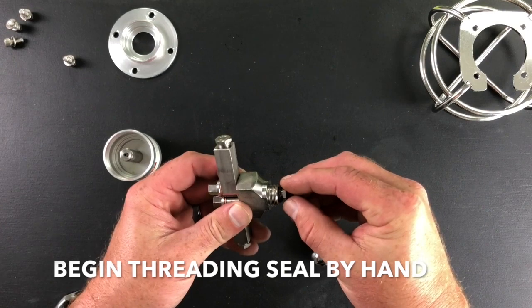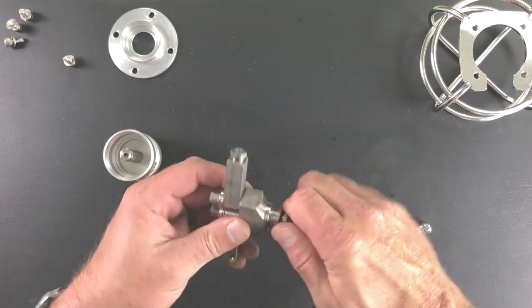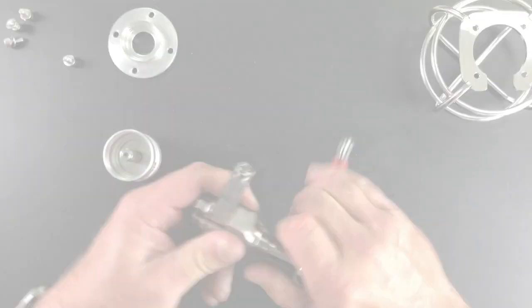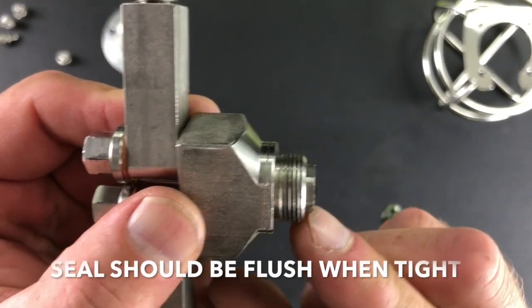Begin threading the seal by hand. Now use your 11 millimeter socket to snug it down. When the seal is properly threaded on, it should be flush with the top of the head.